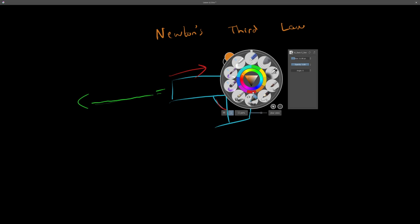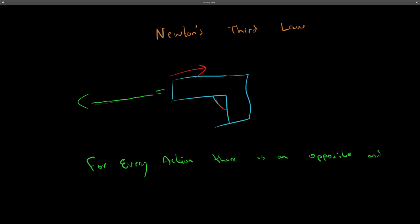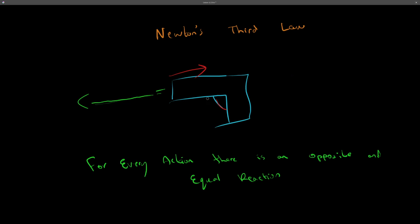Newton's Third Law states that for every action, there is an opposite and equal reaction. So when I exert a force on anything — like triggering the bullet going forward — there's going to be a force that pushes my hand backwards.